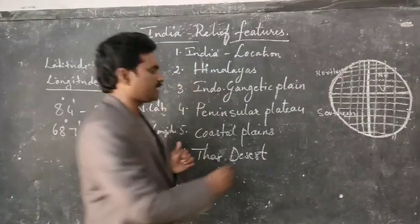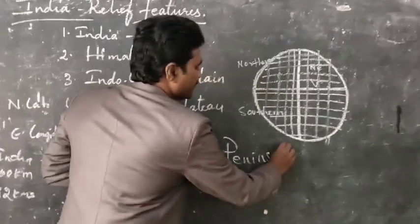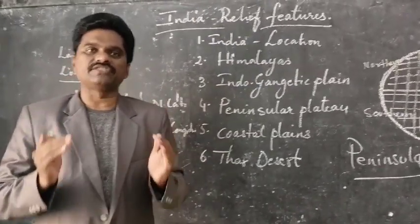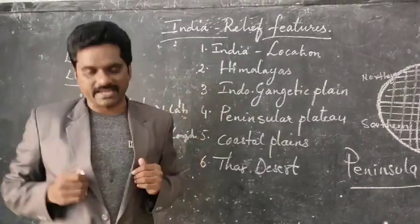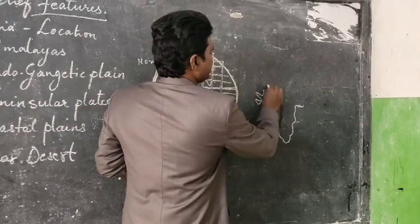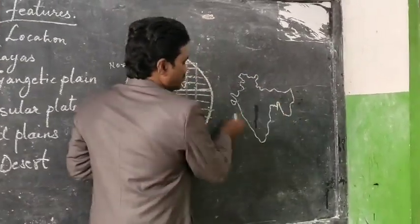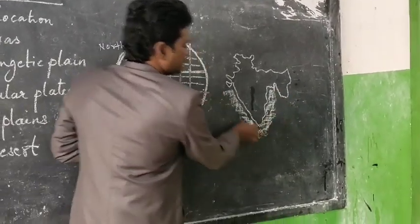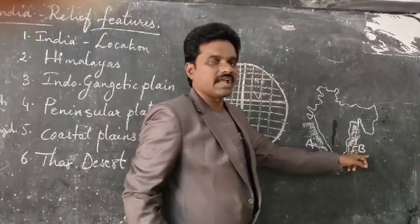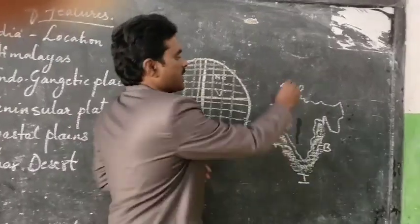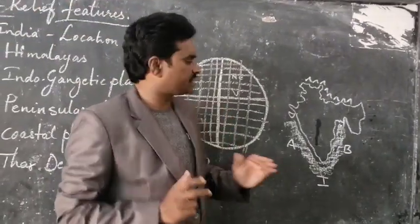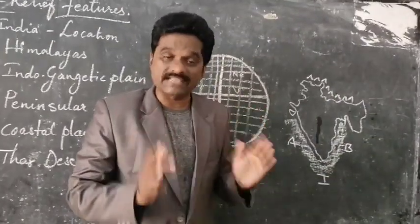Now you are going to learn a very important point about Peninsula. What is meant by a Peninsula? A peninsula is a piece of land which is covered with water on three sides and land on one side. If you observe the Indian map, India has water on three sides — the Arabian Sea on the west, the Bay of Bengal on the east, the Indian Ocean on the south — and the Himalayas on the north.